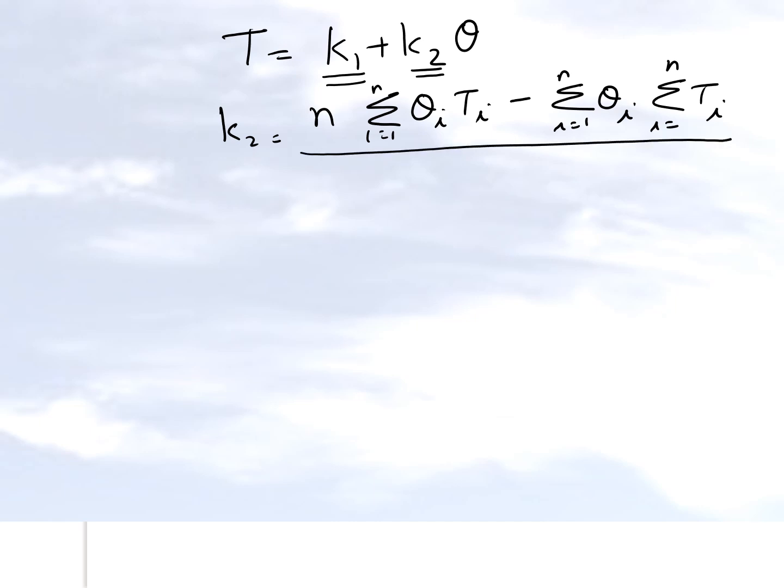So that's the numerator and now this one forms the denominator of the formula. k1 is nothing but the average value of T bar minus k2 times the average value of theta bar. So the bottom line is we need to find out this summation, we need to find this summation, and this one and this one, and we are done.